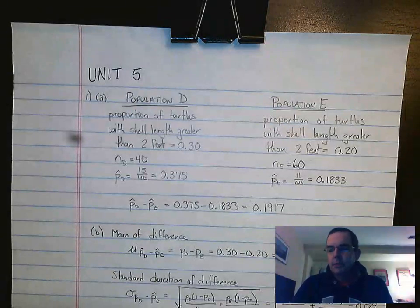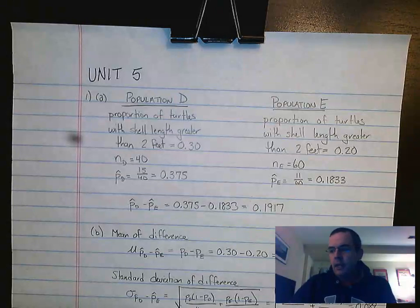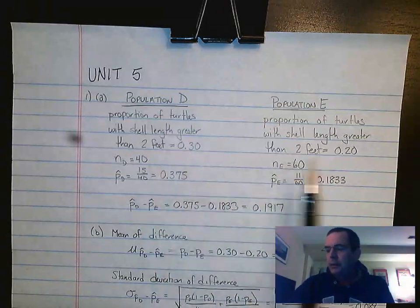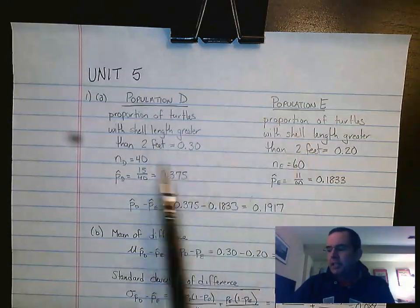We're going to look at Unit 5, Response Question Number 1, Part A. It asks about two populations, Population D and Population E.